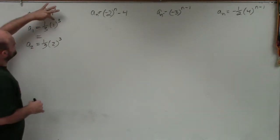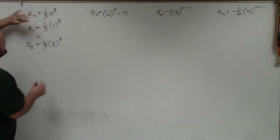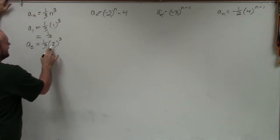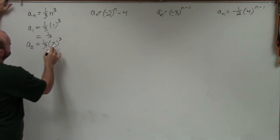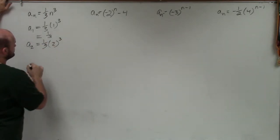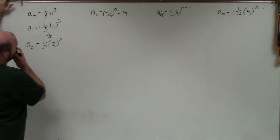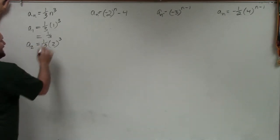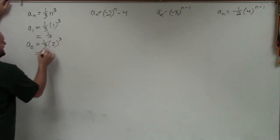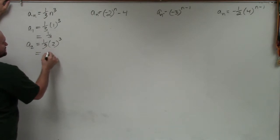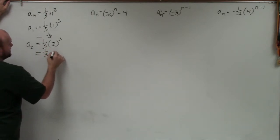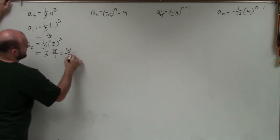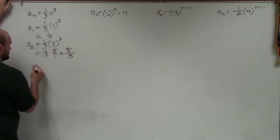1 cubed is just going to be 1. 1 times 1 third is 1 third. For n equals 2, I have 2 cubed, which is going to be 8. 8 times 1 third is basically 1 third times 8 over 1, which is going to leave me with 8 thirds. Just multiply straight across.